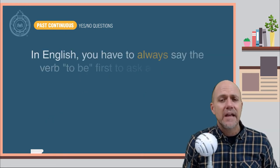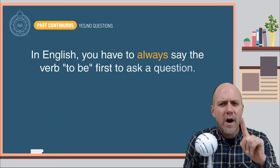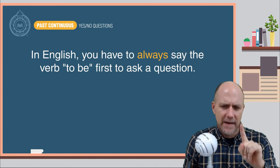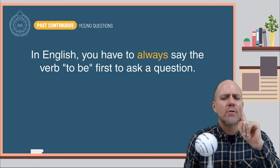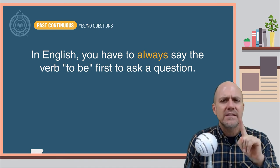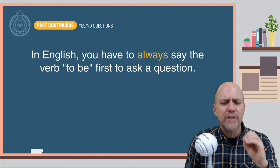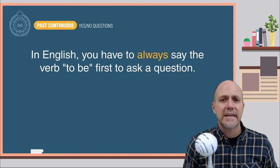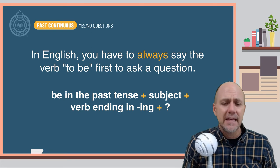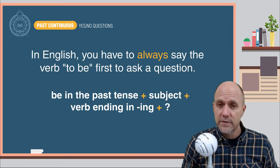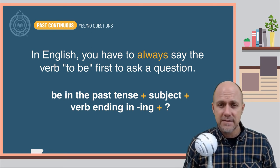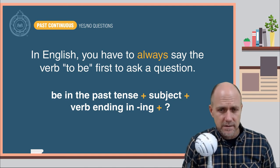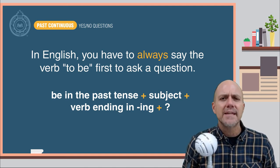In English, there is one big difference from Spanish: you have to always say the verb to be first to ask a question. Here is the formula in English: the verb to be in the past tense, plus the subject, plus the verb ending in -ing.